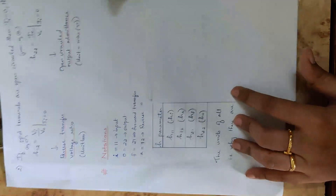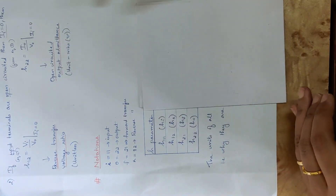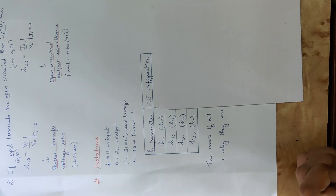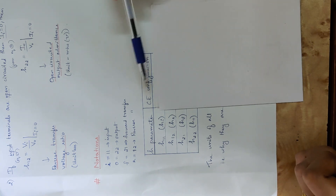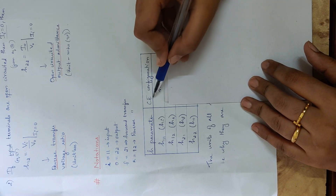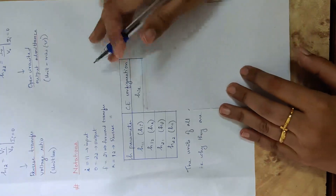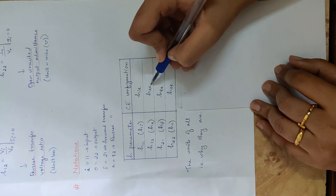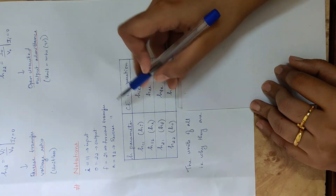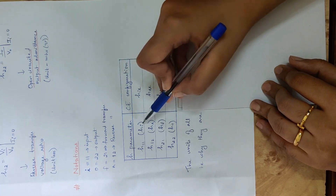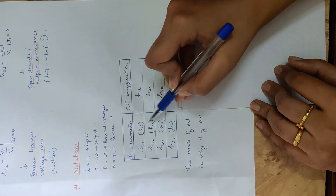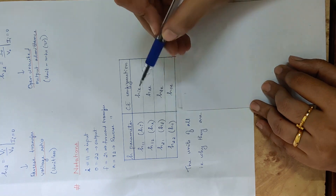The common emitter configuration — emitter common — input and output. We have hie for common emitter, hre, hfe, hoe. For common base configuration: hib, hrb, hfb, hob.